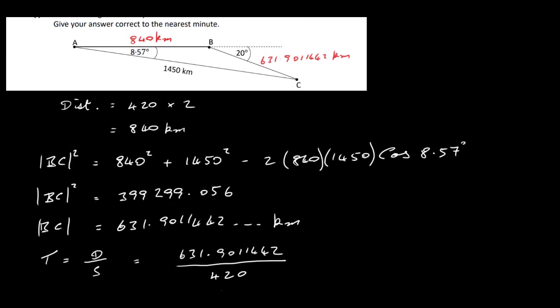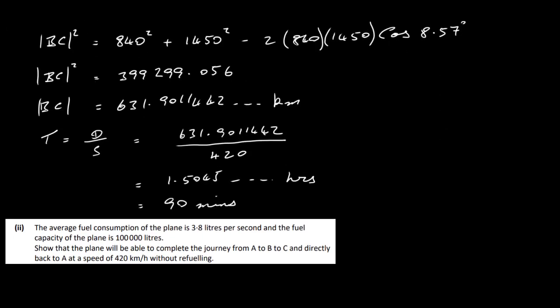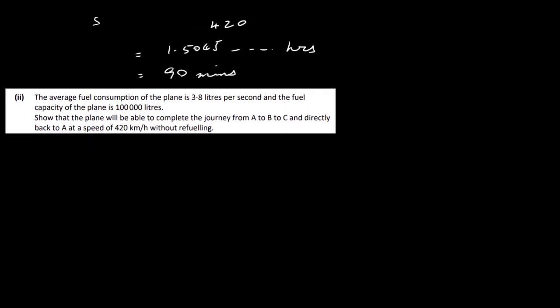We need to give the answer to the nearest minute, so that's 90 minutes from B to C. To summarise: the flight from A to B took 120 minutes, and from B to C took 90 minutes. Now let's look at part 2.